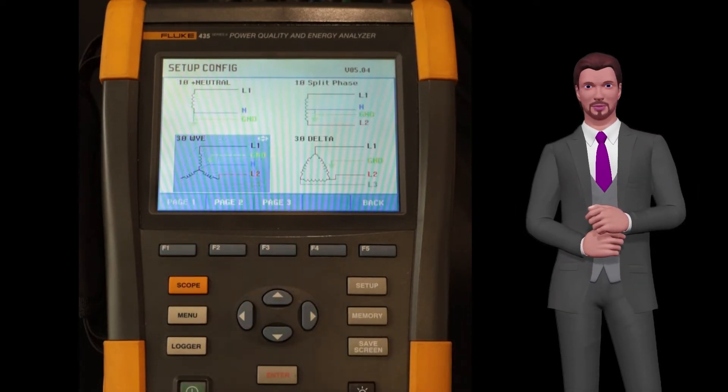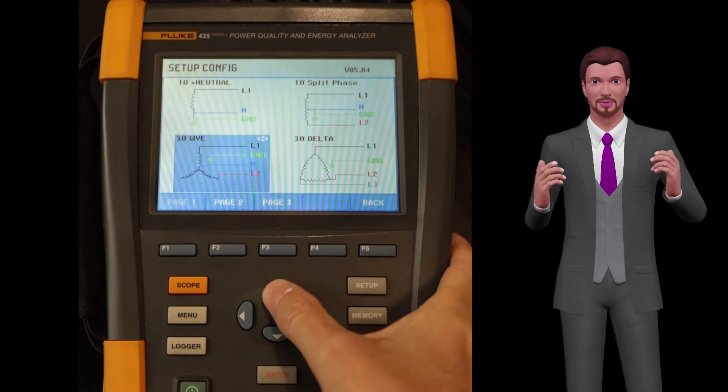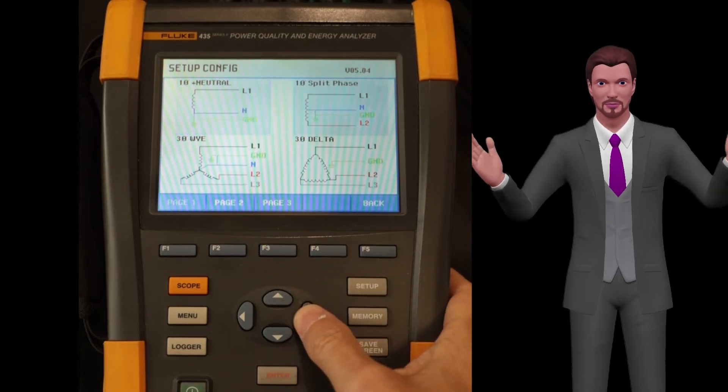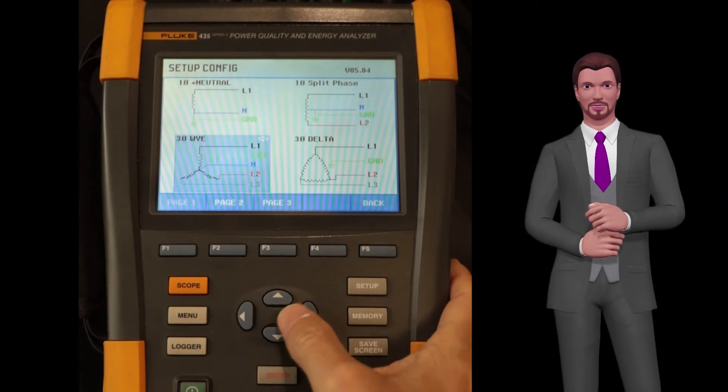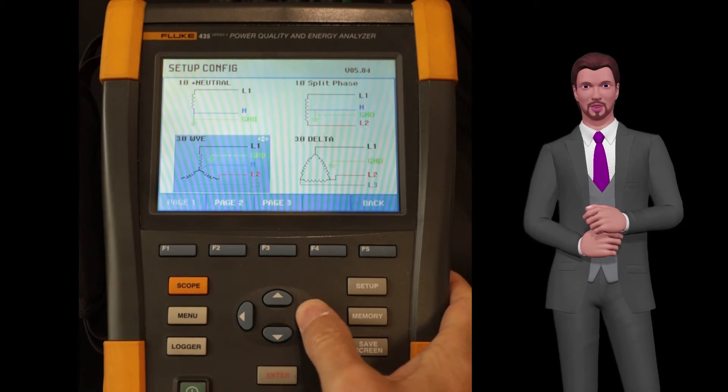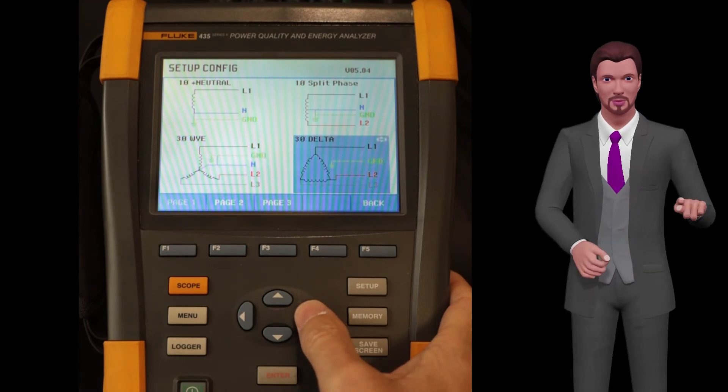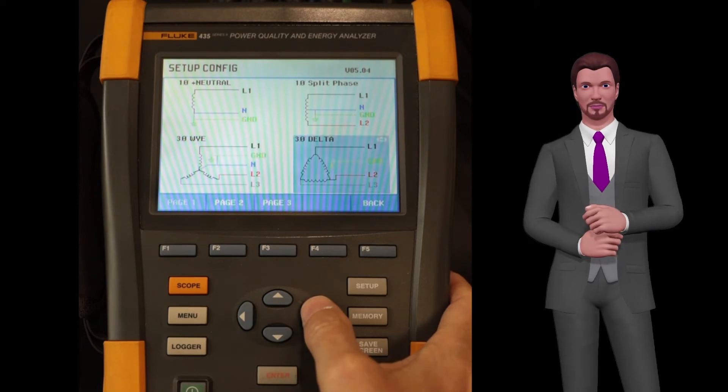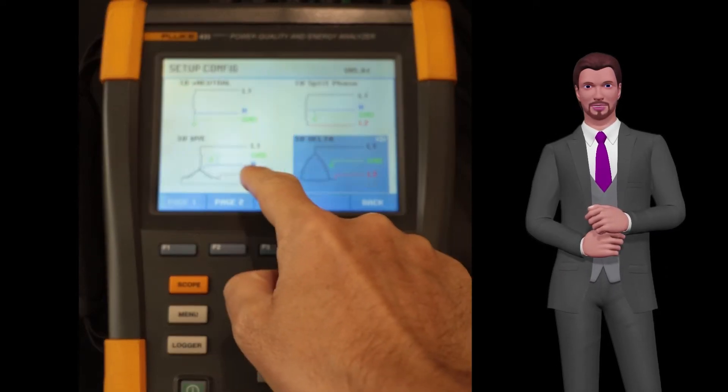In group 1, we probably have the most common systems, such as the single phase system, the split phase system, the three phase star system with grounded neutral and the delta system. The choice between star or triangle, for example, may depend on the presence or not of the neutral.